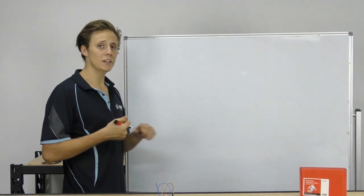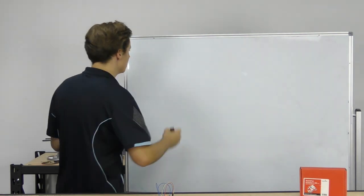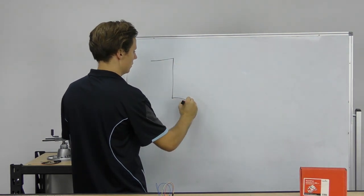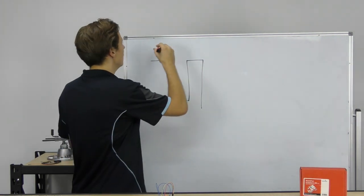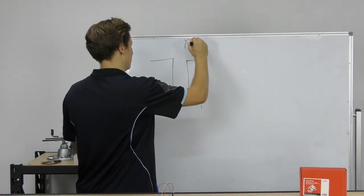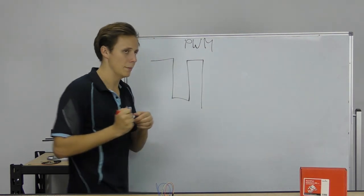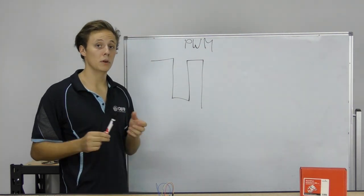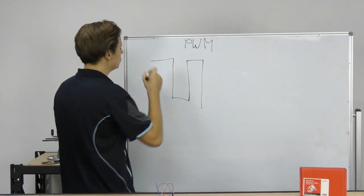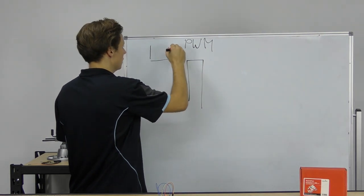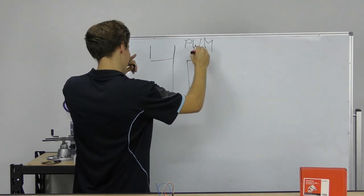So this PWM business — what's it all about? As we said, it's a really rapidly changing signal switching between binary values of zero and one, 0 volts and 5 volts. It looks like a square wave — technically a rectangular wave, but it's called a square wave. PWM has two very important components: the duty cycle and the frequency. The duty cycle represents one cycle, which is a constant length.